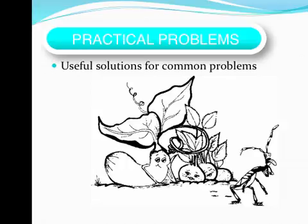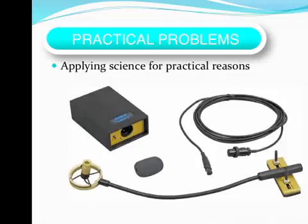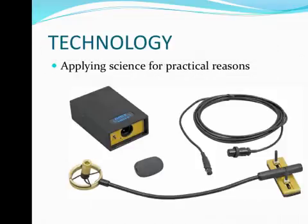Science often finds solutions for practical problems — these are useful solutions for common problems. For example, I was working in my yard and I noticed that there are a lot of insects eating my garden, so I need to figure out a solution to eliminate insects from my garden. Technology is applying science for practical reasons. You're all very familiar with technology, especially computers, but there are a lot of technologies out there that help us apply science.